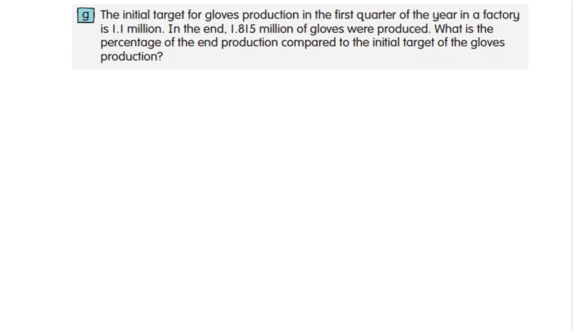Question G: The initial target for gloves production in the first quarter of the year in a factory is 1.1 million. In the end, 1.815 million gloves were produced. What is the percentage of the end production compared to the initial production?